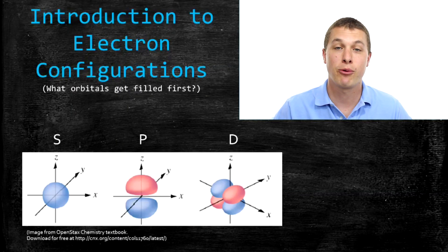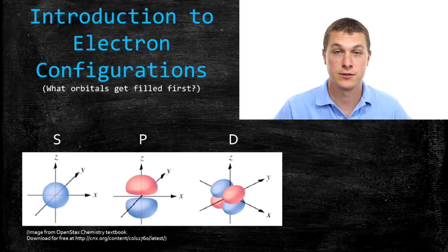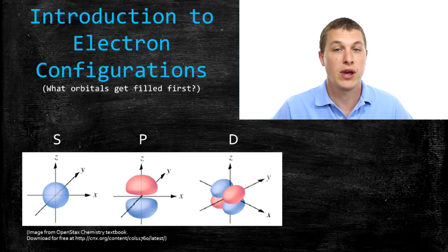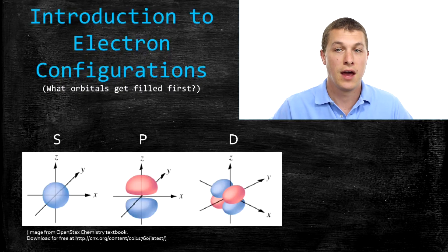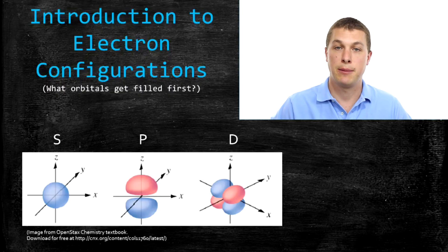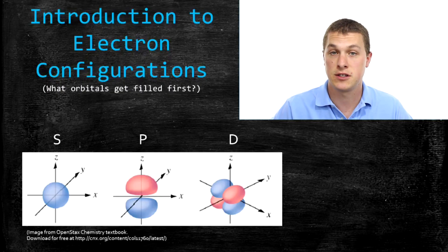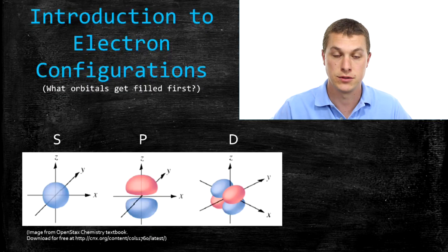Welcome to Real Chemistry. Today we're going to be talking about electron configurations. What we're thinking about here is if we add an electron around a nucleus, what orbital does it go into? The orbitals are just the different shapes that electrons can be smeared out in around atoms.